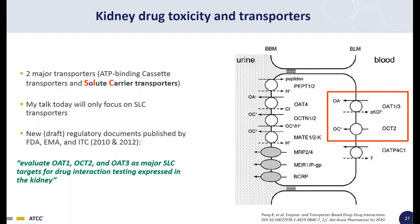In this region, there are two major transporters. One is the ATP-binding cassette transporters, and another is the solute carrier transporters. You can see this graphic cartoon on the right-hand side, circled by a red rectangle. My talk today will only focus on the SLC transporters.